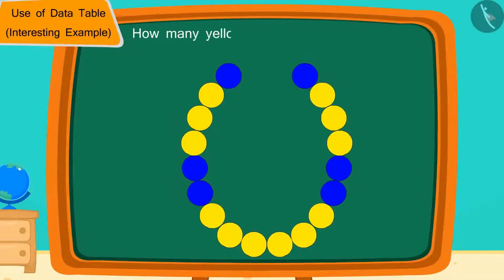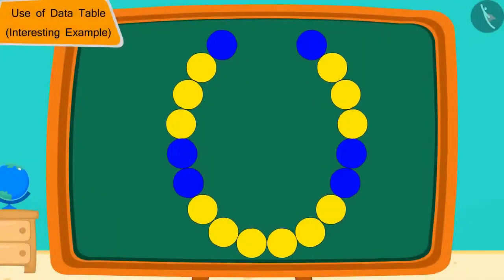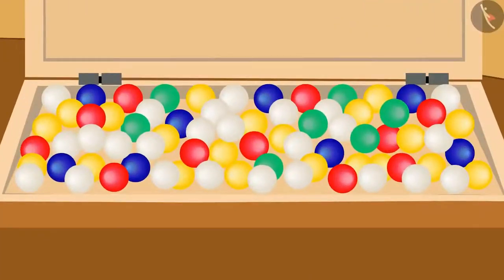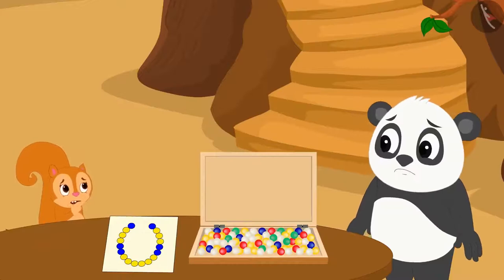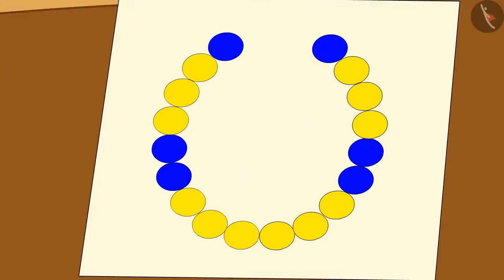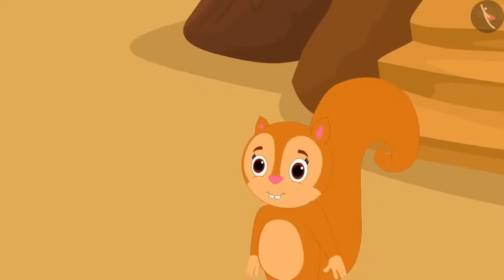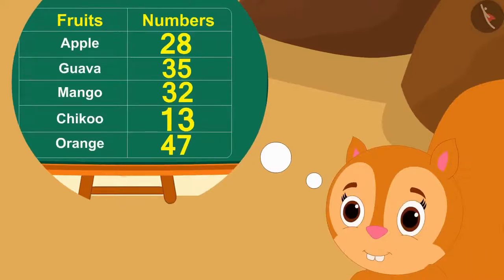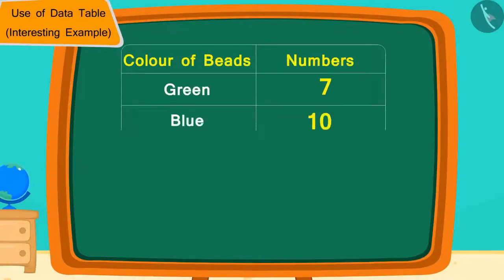Chanda had a box filled with many different colored beads — red, green, blue, yellow and white. Golu got very excited and made a drawing of blue and yellow beads on paper and said let's make a necklace of this design. Children, how many yellow and blue beads do you see in Golu's design? Golu's design consists of 12 yellow and 6 blue beads. But all the beads are scattered, so Chanda and Golu couldn't tell if they had enough beads.